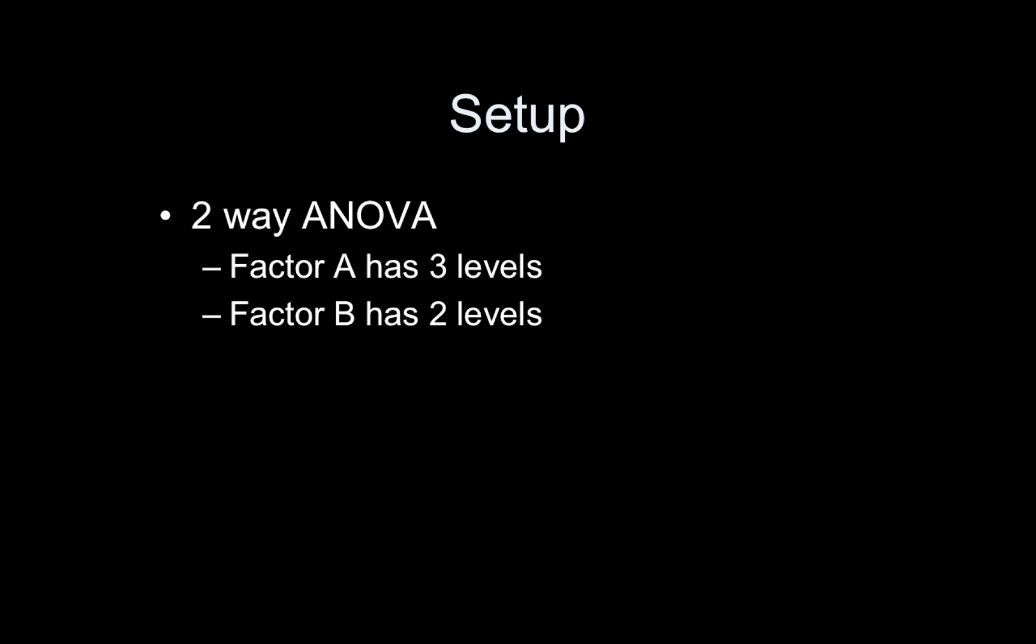So here's the setup. The two-way ANOVA that I'm going to be focusing on today has two factors, A and B. A has three levels, so this could be two types of patient groups as well as a control group. And factor B could be gender, males and females.